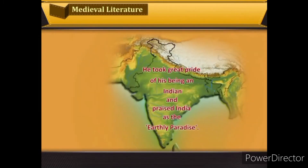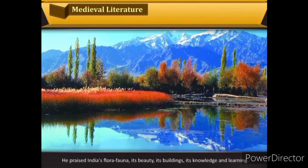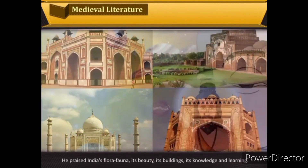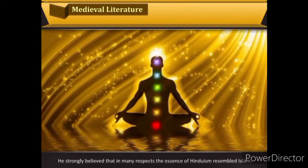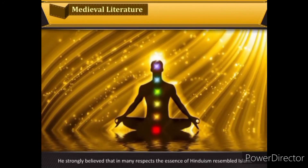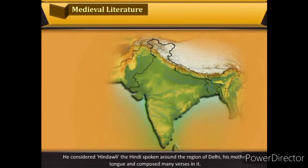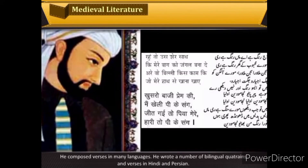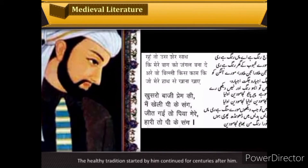Amir Khusro took great pride in being an Indian and praised India as the earthly paradise. He praised India's flora, fauna, its beauty, its buildings, its knowledge and learning. He strongly believed that in many respects the essence of Hinduism resembled Islam. He considered Hindavi — the Hindi spoken around Delhi — his mother tongue and composed many verses in it, including bilingual quatrains in Hindi and Persian. The healthy traditions he started continued for centuries.